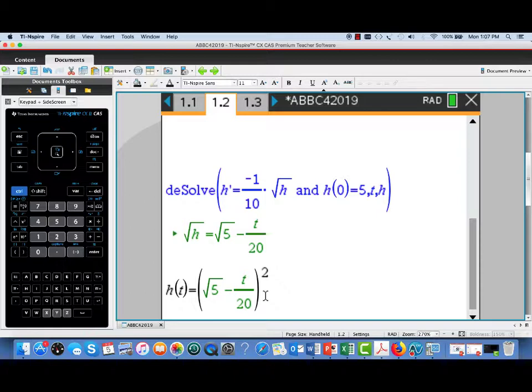Identify your independent variable t, your dependent variable h, and it'll give you a solution. Now, this solution was in terms of square root of h, but we can easily square both sides to get the final solution to this problem.